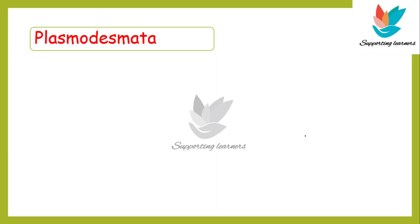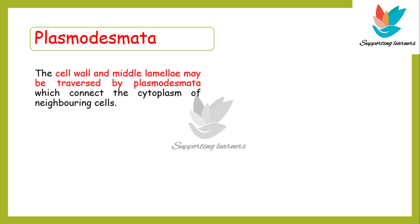Let's start today's video and talk about plasmodesmata. In the previous video we talked about the cell wall and we discussed about the layers of cell wall which are the primary layer, secondary layer and the tertiary layer, and we also talked about the middle lamella. The cell wall and middle lamella may be traversed by structures called plasmodesmata which connect the cytoplasm of neighboring cells.